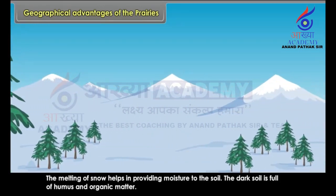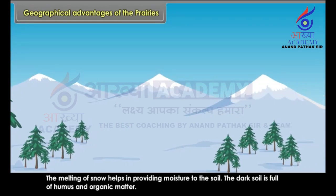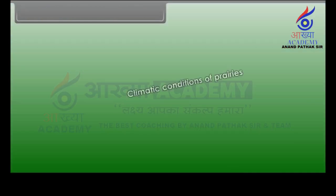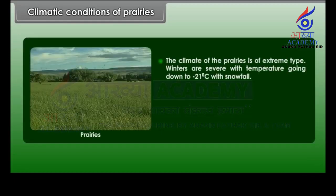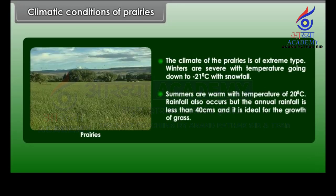The melting of snow helps in providing moisture to the soil. The dark soil is full of humus and organic matter. The climate of the Prairies is of extreme type. Winters are severe with temperature going down to minus 21 degrees Celsius with snowfall. Summers are warm with temperature of 20 degrees Celsius. Annual rainfall is less than 40 centimetres, which is ideal for the growth of grass.